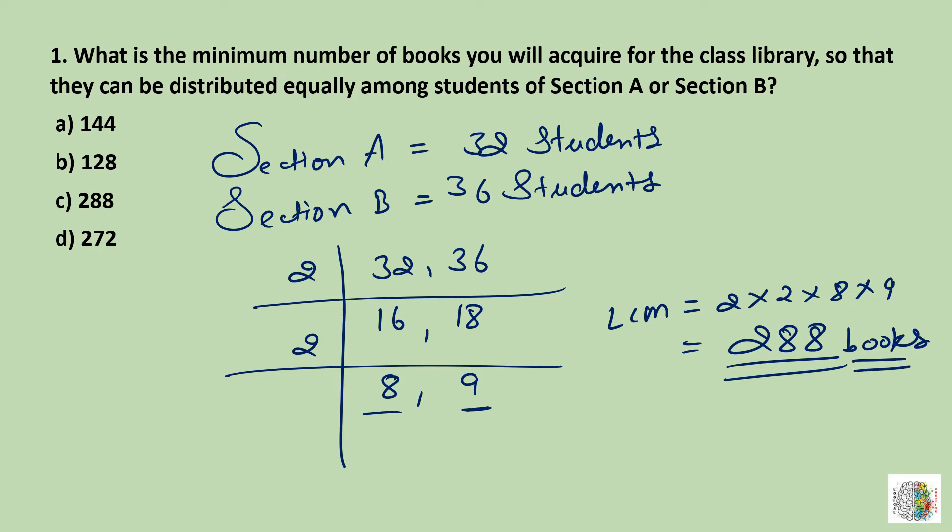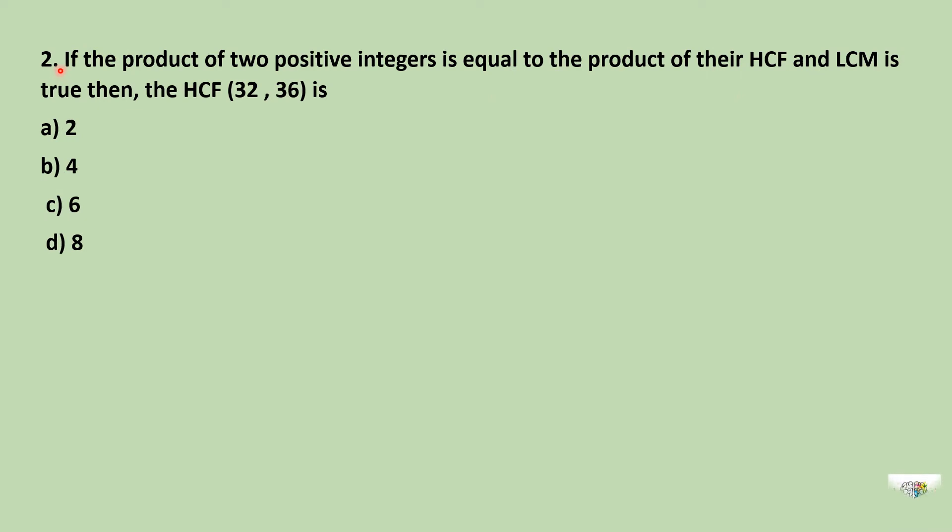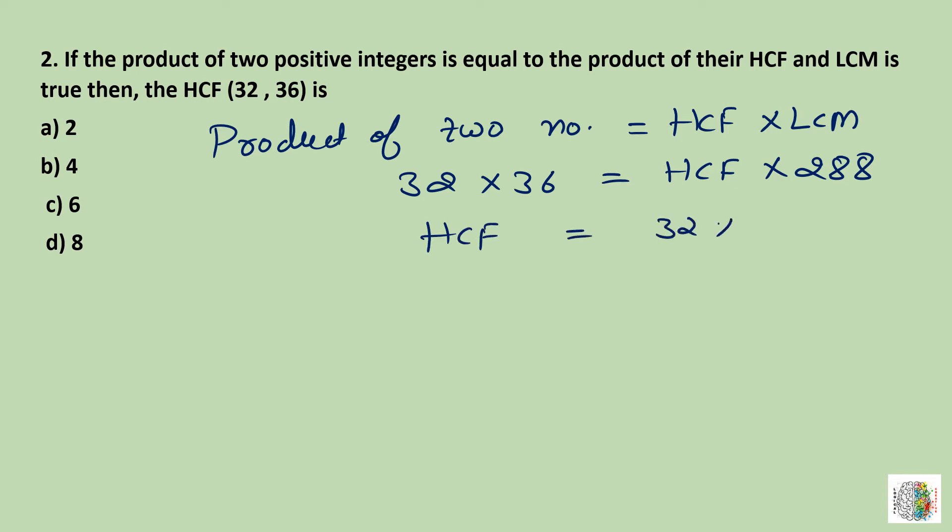Question number two: If the product of two positive integers is equal to the product of their HCF and LCM is true, then the HCF of 32 and 36 is? We have to find the HCF of 32 and 36. We will use the formula: product of two numbers is equal to HCF into LCM. So 32 into 36 divided by 288. This gives us 4 times 36 divided by 288, which equals 4. So the HCF value is 4, and our correct option is B.